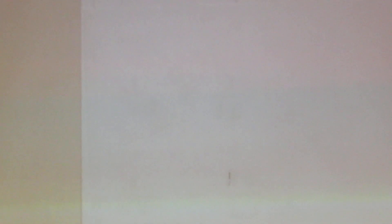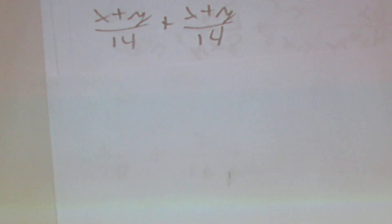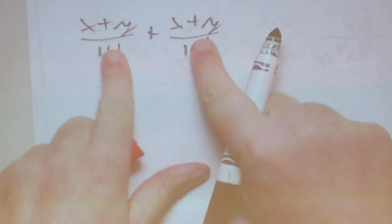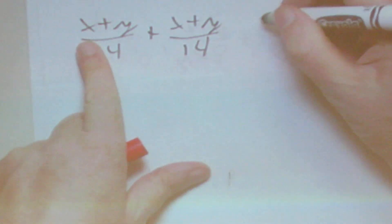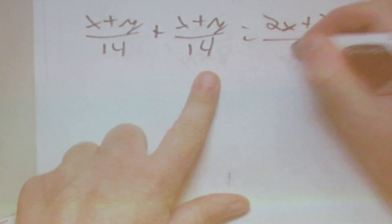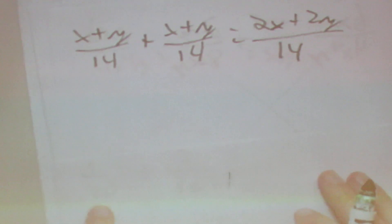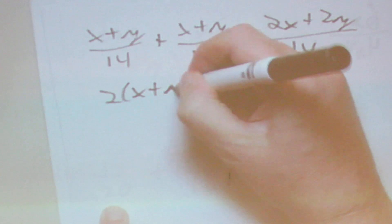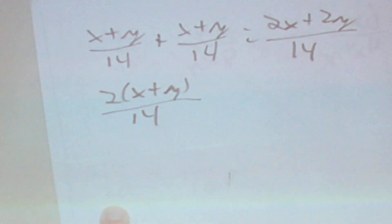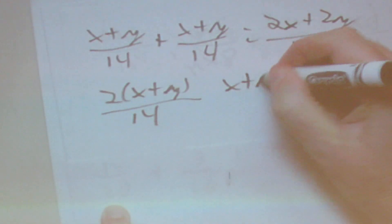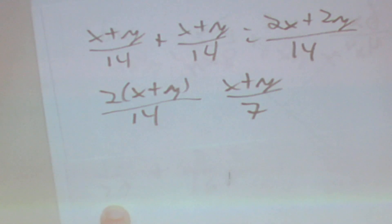Next, we're going to have something like x plus y over 14 plus x plus y over 14. It's a common denominator, so we can just add the numerators: x plus x is 2x, y plus y is 2y, all over 14. We can factor out a 2 to get 2 times x plus y over 14. Simplifying the 2 and 14, we're left with x plus y over 7.